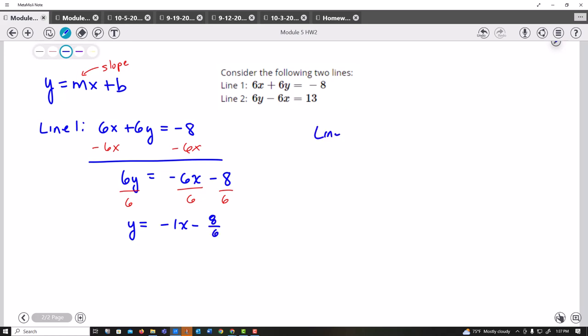So for line 2, I have 6y minus 6x equals 13. I could start by adding 6x to both sides. You probably are catching on that these values, the negative 6x and the positive 6x. If you don't see it yet, 6x plus 13. I'm going to divide by 6 every term. So I get y equals 1x plus 13 over 6.